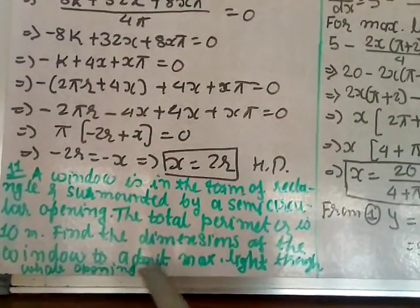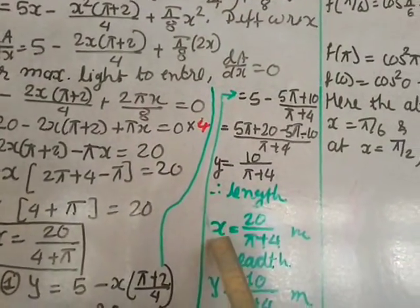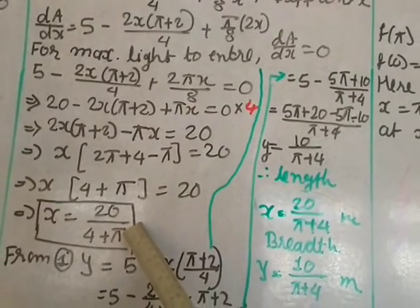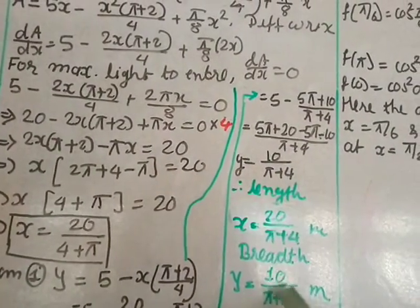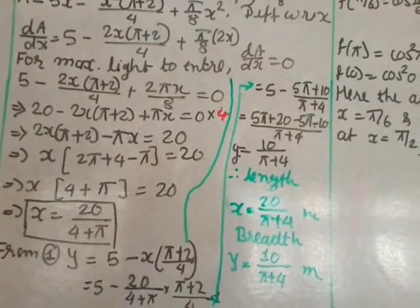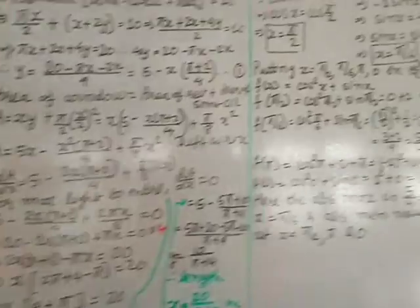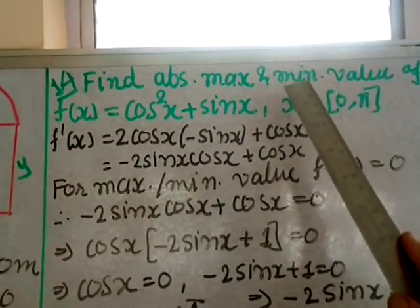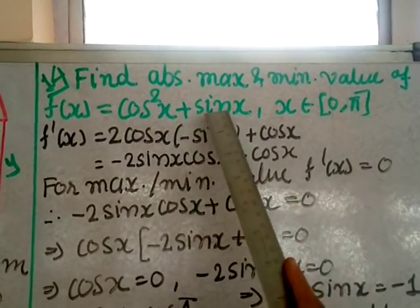The dimensions of the window that admit maximum light are: length x = 20/(π + 4) metres and breadth y = 10/(π + 4) metres. The radius of the semicircle is x/2 = 10/(π + 4) metres.